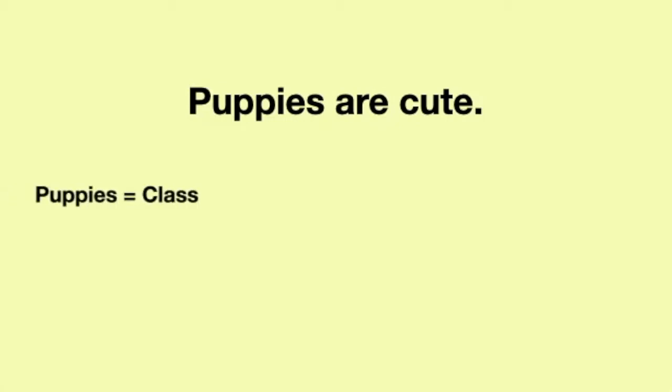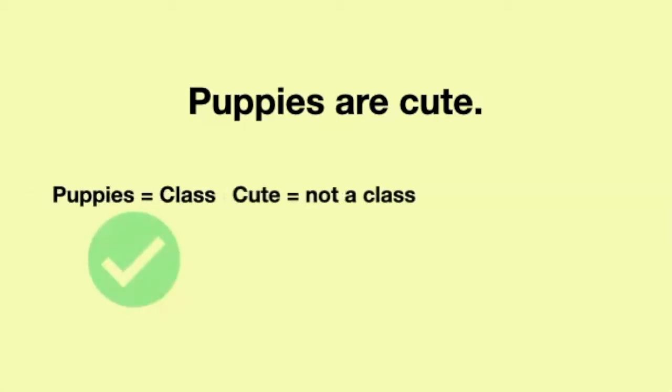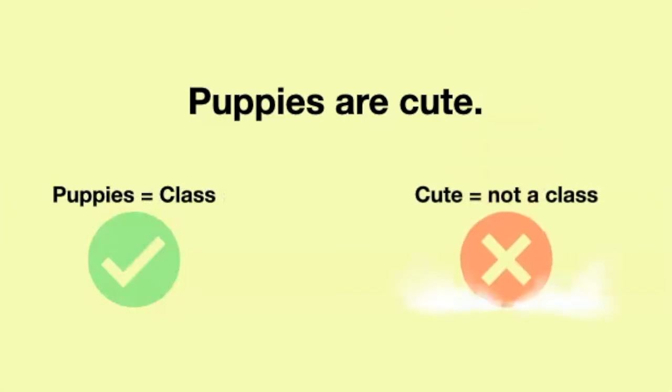Here's our example again: puppies are cute. The parts of the proposition that refer to the classes of things are called the subject term and the predicate term. Sometimes when we run across categorical propositions, it isn't obvious that we're talking about classes of things. Puppies is a class, but cute is not a class of things — it's a property that things have. But for any property there's a class of things that have that property. In this case, cute animals. So we'd have to rewrite our proposition as 'puppies are cute animals' to make it clear that we're referring to two classes of things.